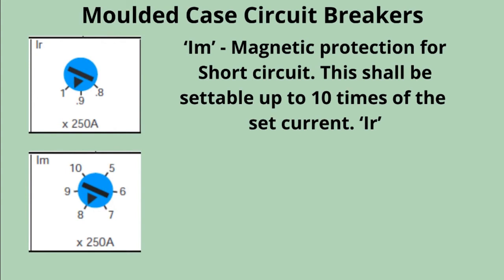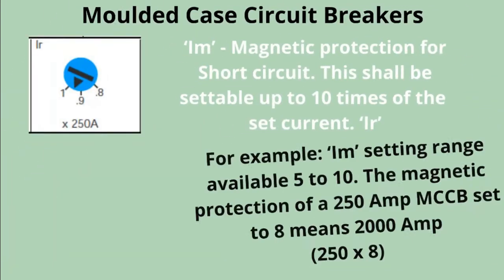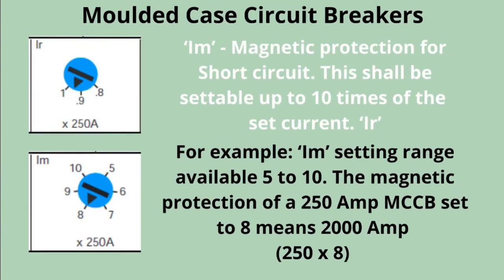Im is the magnetic protection setting for short circuit. This shall be settable up to 10 times of the set current. For example, the Im setting range is available from 5 to 10. The magnetic protection of a 250 amp MCCB set to 8 means 2000 amp — that is 250 multiplied by 8.